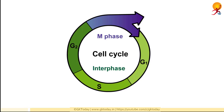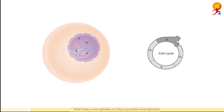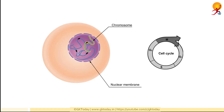The cell then proceeds through a series of events collectively called M phase for mitosis, that result in the formation of two daughter cells. In preparation for cell division, the chromosomes must be duplicated and then distributed so that each daughter cell receives an identical copy of the complete genome.